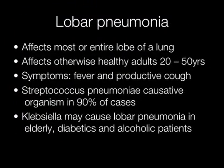Lobar pneumonia affects most or the entire lobe of the lung. It affects otherwise healthy adults, typically 20 to 50 years old. Symptoms include fever and a productive cough. The causative organism in most cases is Streptococcus pneumoniae. Klebsiella may cause lobar pneumonia in elderly, diabetic and alcoholic patients.